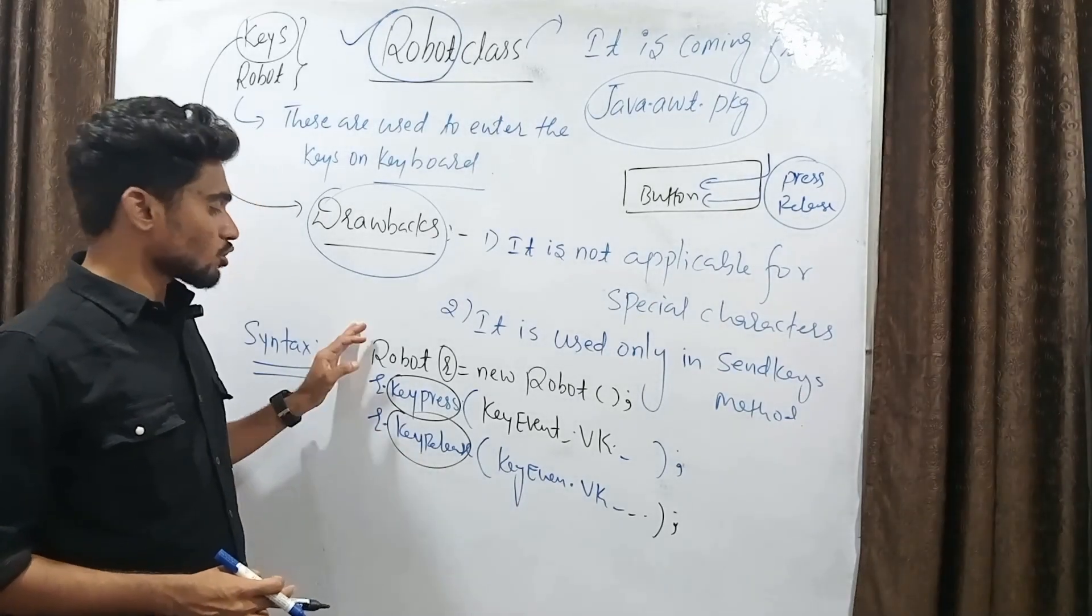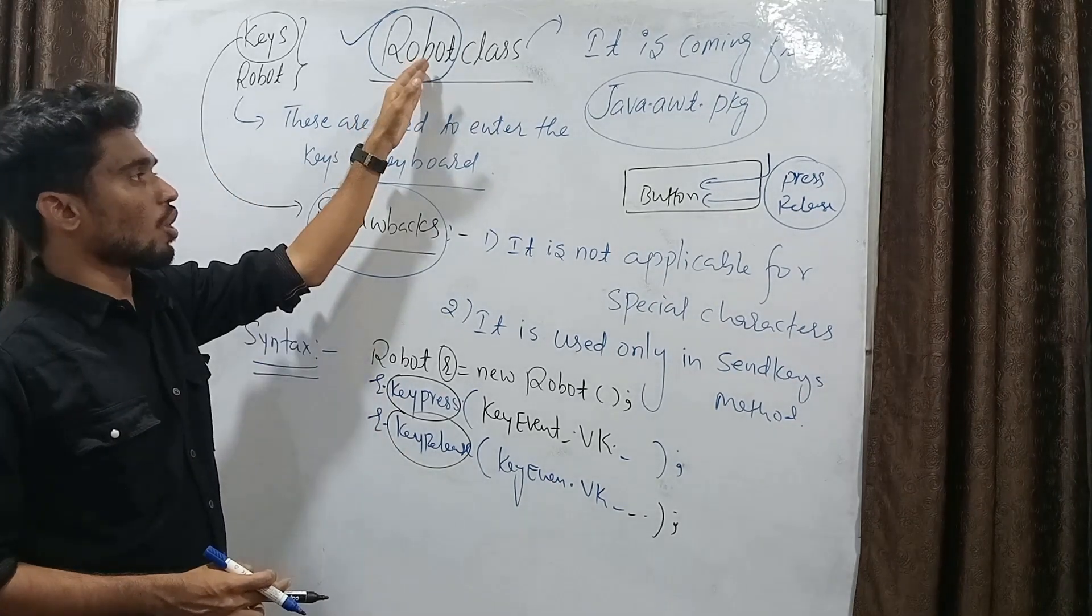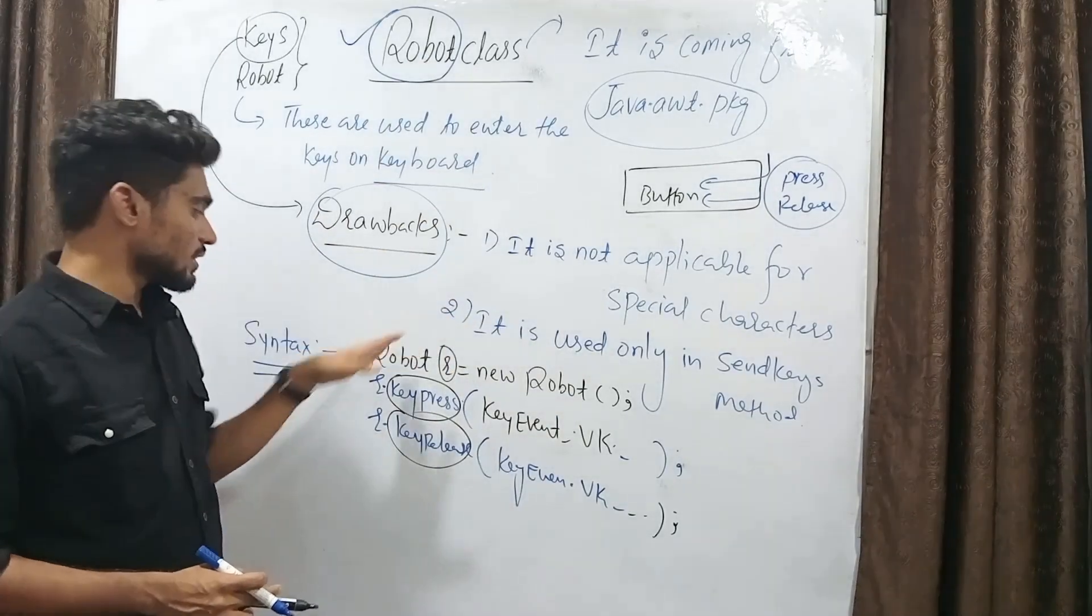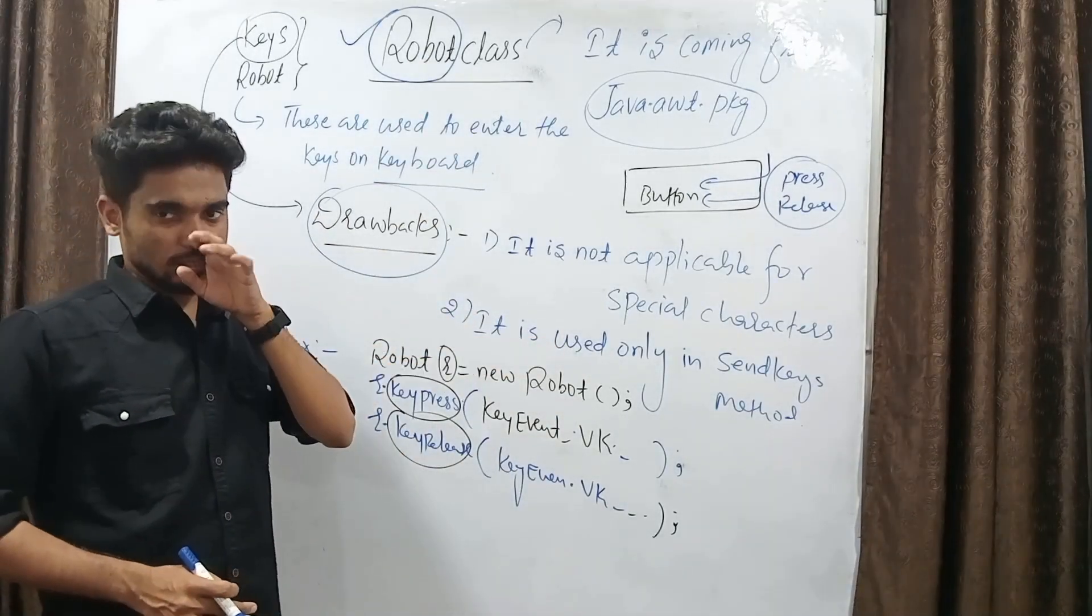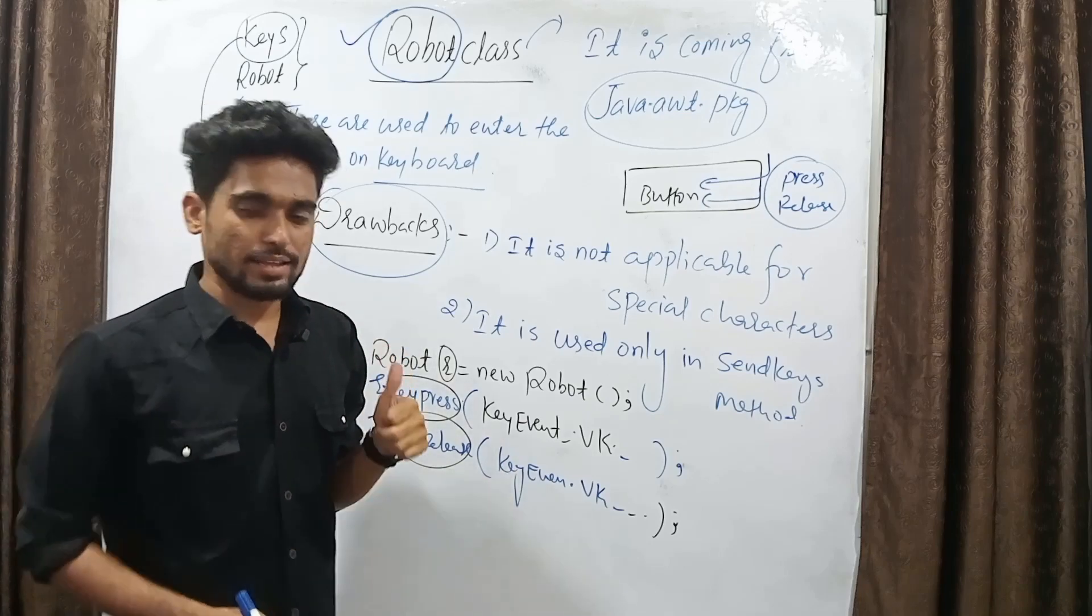So, by using this robot class, we can click on special characters and we can use this outside the sendKeys methods also. Done guys.